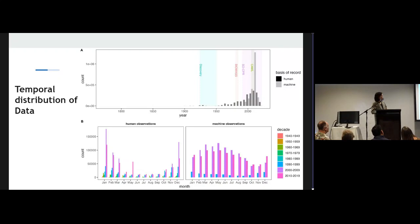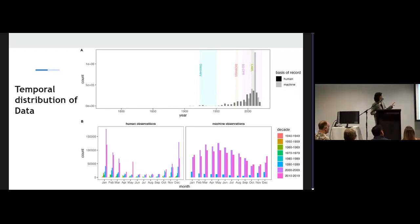There is also a bias in temporal distribution. Many of the highlighted bars show increases in records due to important projects such as the Discovery Project and the Biomass Census of Marine Antarctic Life. There is also a seasonal bias where human observations are fewer during winter, but machine observations do not show this bias as they are mostly tracking data.